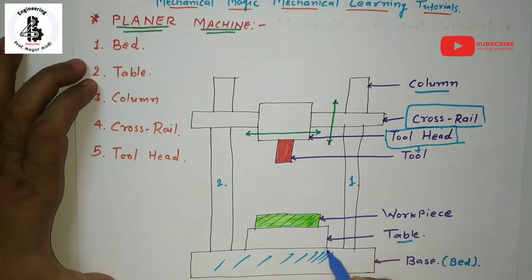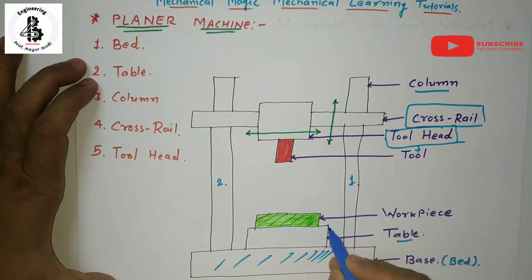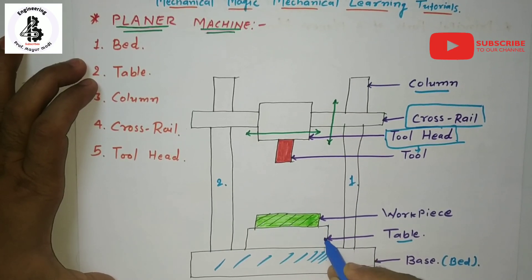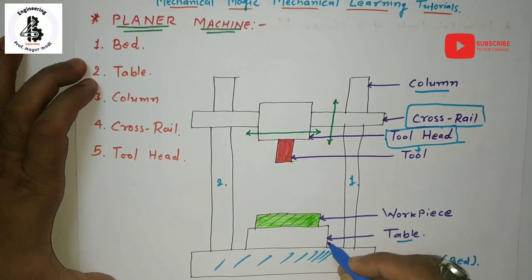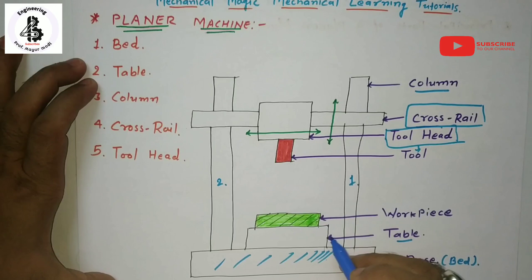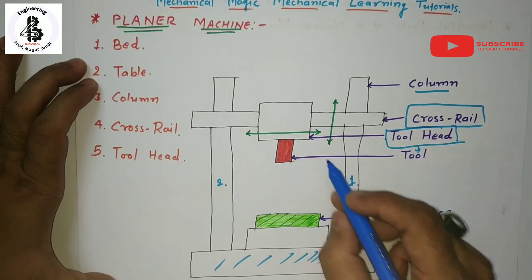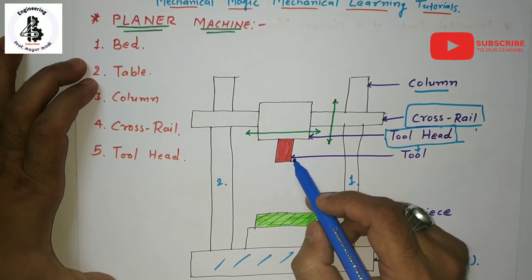The table rests onto the base and will slide with a reciprocating motion. In the case of the planer machine, the tool will be a stationary component and the table that will be movable.